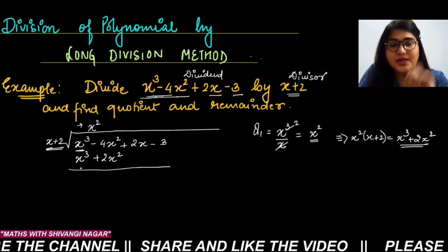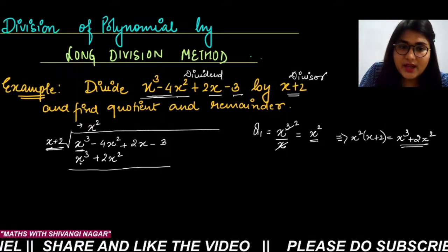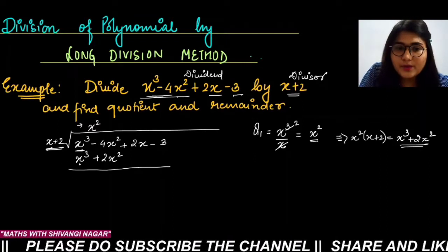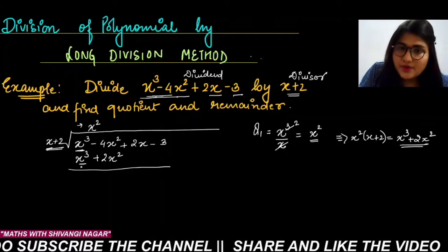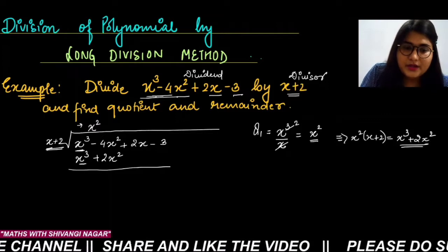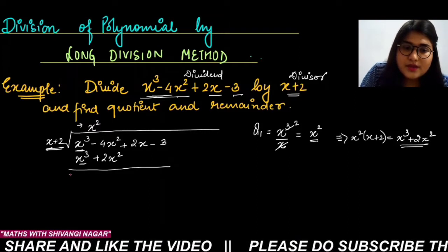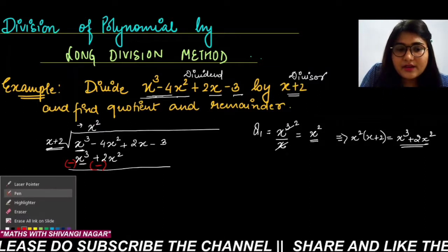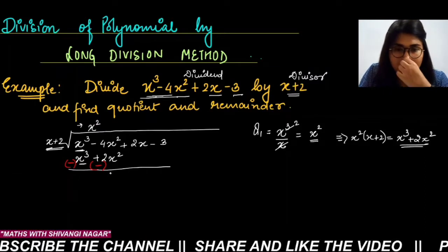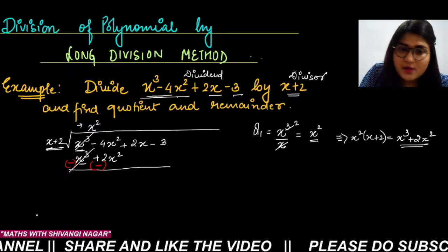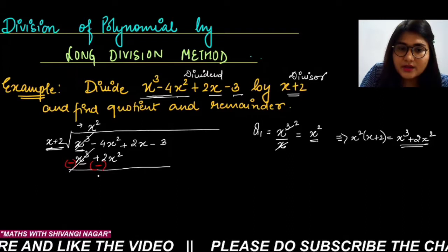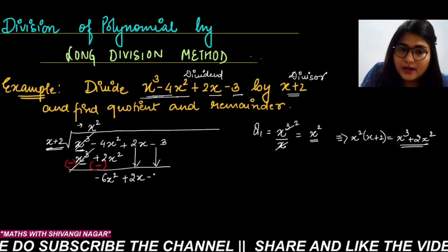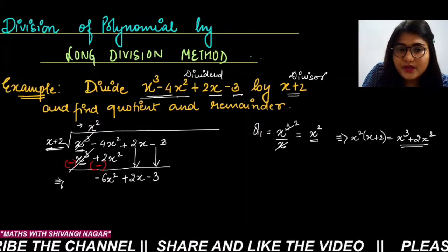Write x³ plus 2x² in the second row. We have to subtract — so we change the signs. Since x³ is positive below, we make it negative; and 2x² is positive, we make it negative. So minus x³ cancels with x³. Minus 4x² minus 2x² makes minus 6x². And here, plus 2x and minus 3, you drop down. This result — minus 6x² plus 2x minus 3 — is your new dividend.